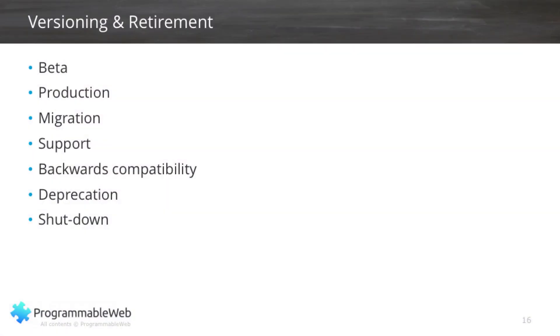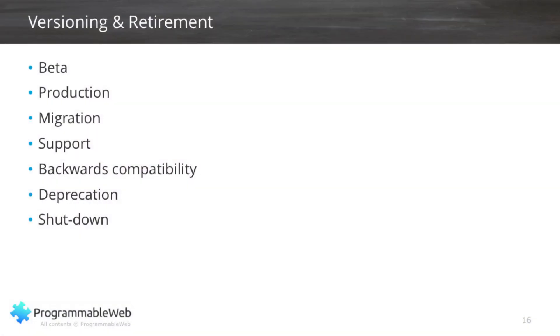Last phase — versioning and retirement. We've discovered out in the wild lots of different versions of the same API: a beta version, a production version, a migration version. You have to think about all of these issues when you've got multiple versions in the market. The beta version is the test version. The production version is the one everybody's using for real in their applications. You're going to have to deal with how you get people to migrate from one to the other, and what degree of support you're going to provide for the different versions in the marketplace. And eventually you will retire your APIs — at that point you have to move existing application developers to one of the newer production versions. What about backwards compatibility? What about deprecation? When you finally decide to deactivate an API, what is your strategy?